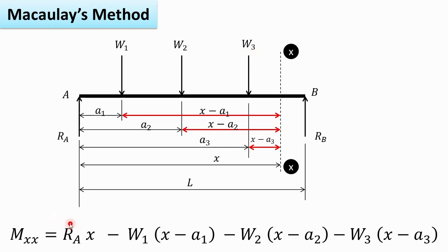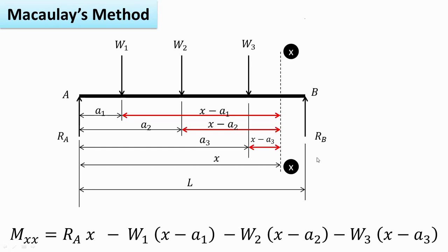Clockwise moments are positive, so Ra producing clockwise moment is positive. Whereas W1, W2 and W3, producing anticlockwise moments, are negative. The first step is always to find out reactions Ra and Rb. Here we have kept them as is, without calculating the reactions, as we are seeing the general method of Macaulay.